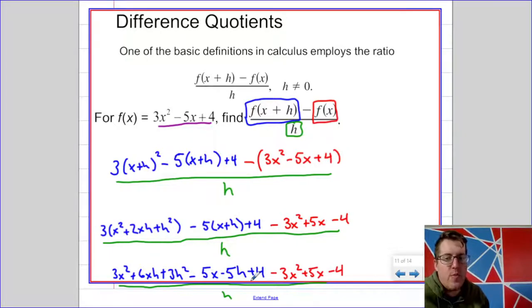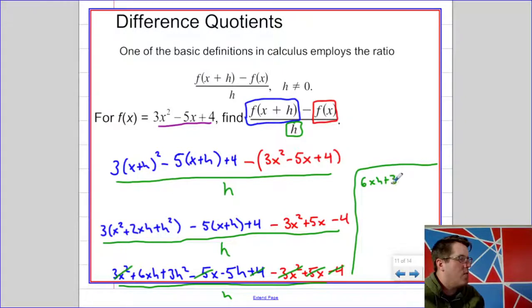Okay, I have everything distributed out. And I'm going to, again, look for those cancellations. So the 3x squared and the negative 3x squared will cancel. The negative 5x and the 5x will cancel. And the 4 and the negative 4 will cancel. There should always be some sort of cancellation. So that's going to leave us with 6xh plus 3h squared minus 5h all over h, which is going to be 6x plus 3h minus 5.